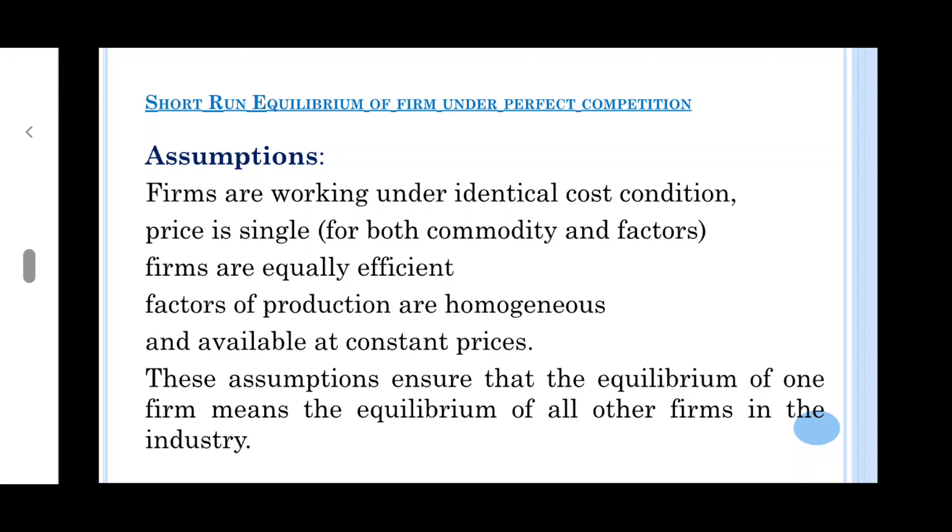Next assumption is factors of production are homogeneous. All factors of production, raw materials, and inputs required for production are perfect substitutes. And these factors of production are available at constant prices to all firms.